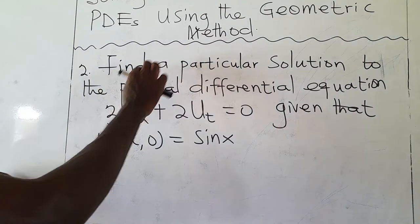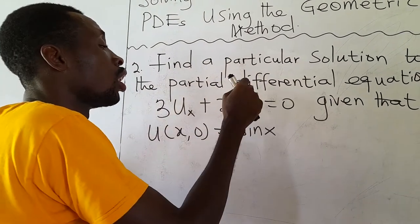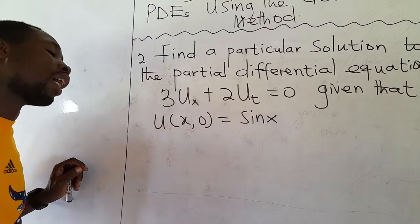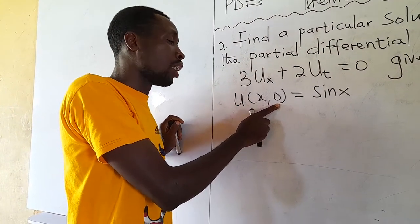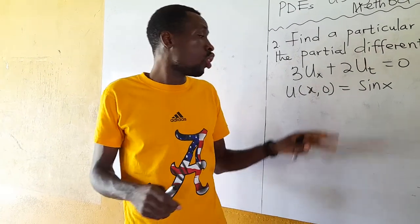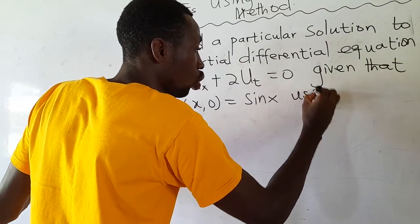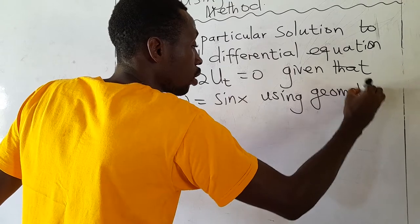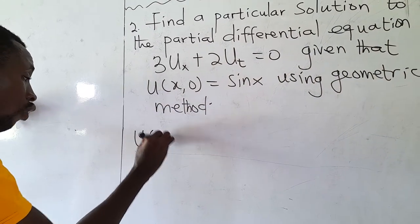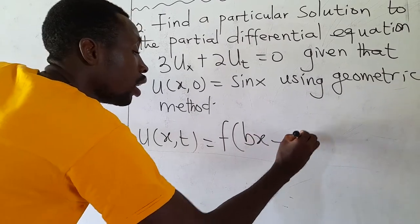Let's look at the second equation. Find a particular solution to the partial differential equation: 3 times the partial differentiation of U with respect to x, plus 2 times the partial differentiation of U with respect to t, equals 0, given that U(x, 0) equals sin(x). This is an initial condition since the condition is subjected to time. Please check out my videos on auxiliary conditions to partial differential equations on YouTube. Using the geometric method, the general solution is U(x, t) equal to F of (Bx minus At), where our B is 2 and our A is 3, giving F of (2x minus 3t).